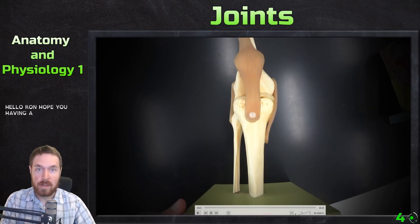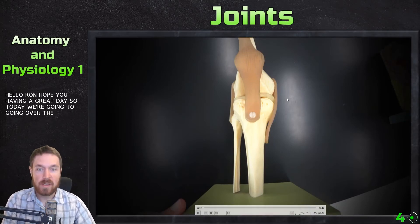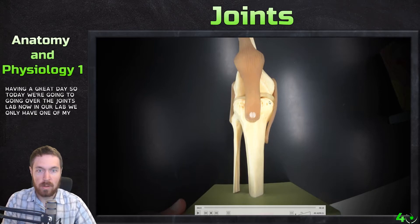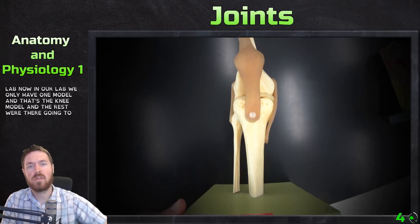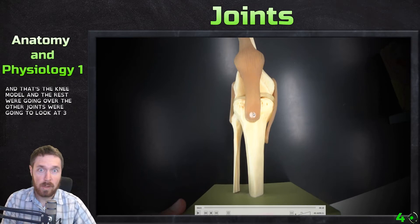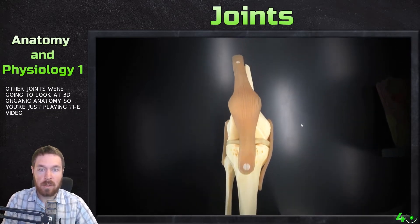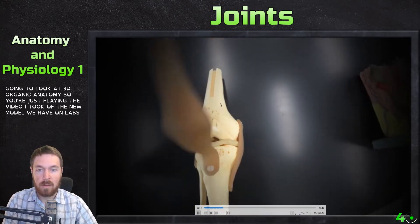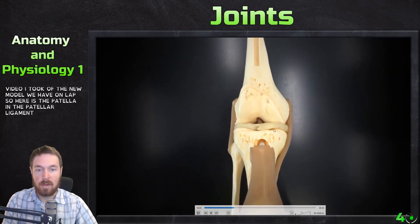Hello everyone, hope you're having a great day. Today we're going to be going over the joints lab. In our lab we only have one model and that's the knee model, and for the other joints we're going to look at 3D Organon Anatomy. Here is a video of the knee model we have in lab — you can see the patella and the patellar ligaments coming down.